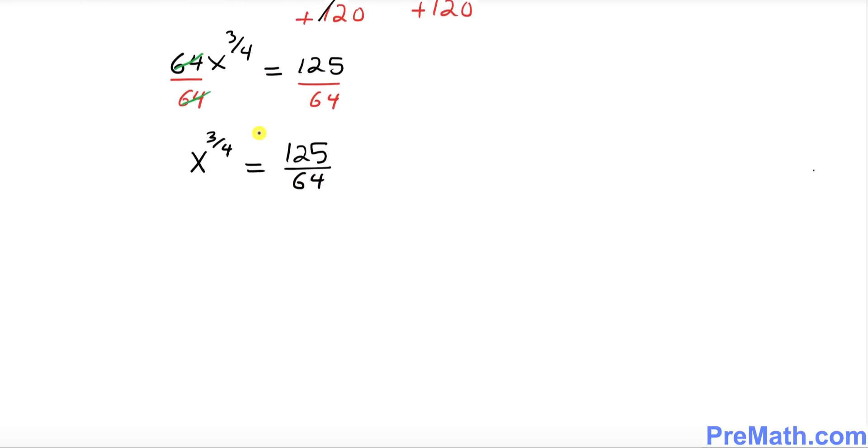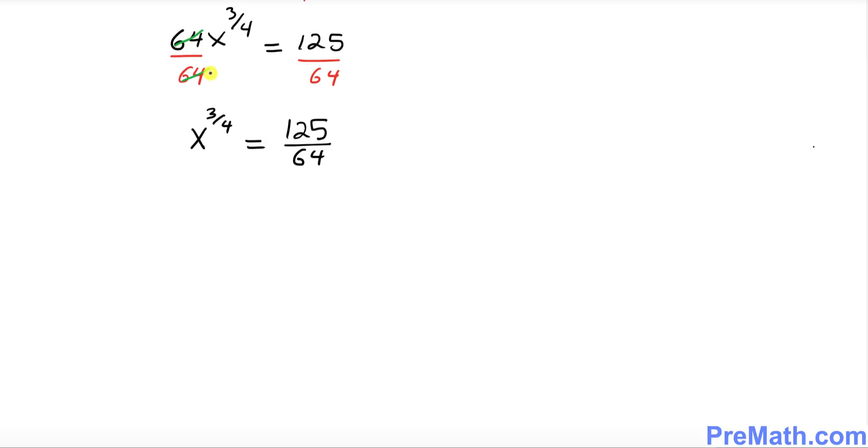Now the next step that we want to do is we want to get rid of this exponent of this x variable. So the easiest way to get rid of this exponent is to take the power of the reciprocal of this exponent. Reciprocal means the opposite, that's going to become 4 over 3. So I'm going to take the power of 4 over 3, just flip it over, and I'm going to take the power of 4 over 3 here as well.